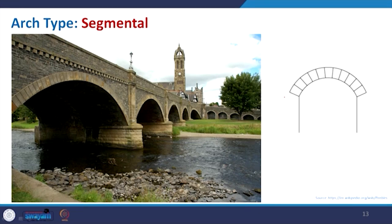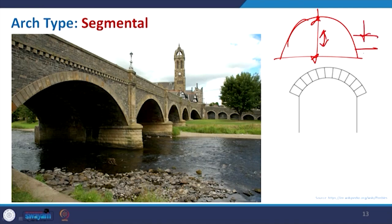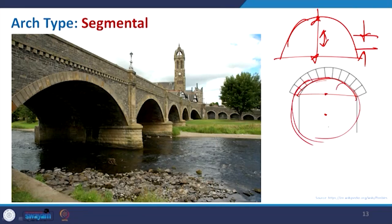Coming to the segmental arch: it is basically when you have a semicircular arch and try to reduce the rise from both sides — you squeeze it and it creates a segment. In this case, the center of the arch is no longer at the midpoint; it shifts to complete the form. The segmental arch is useful because it decreases the rise of the arch wherever that is required. In a bridge example you can see that it is not exactly semicircular — this is the segmental arch formed in that particular bridge.